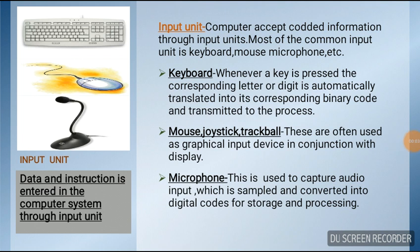Let's talk about Category 1: Input Unit. A computer accepts coded information through input units. The most common input units are keyboard, mouse, microphone, etc. Example 1 — Keyboard: whenever a key is pressed, the corresponding letter or digit is automatically translated into its corresponding binary code and transmitted to the processor.